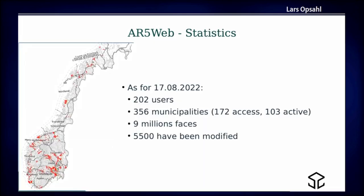I'll say something about the statistics of this solution. It was sent to production about one year ago, and as of one week ago we had 200 users from municipalities. The whole of Norway has 356 municipalities, and 172 have gained access to the application. 103 are daily active. The data sets cover all of Norway — more than 2,000 kilometers in length. We have 9 million spaces, and until now 5,500 have been modified, which is what you see in red in the image.